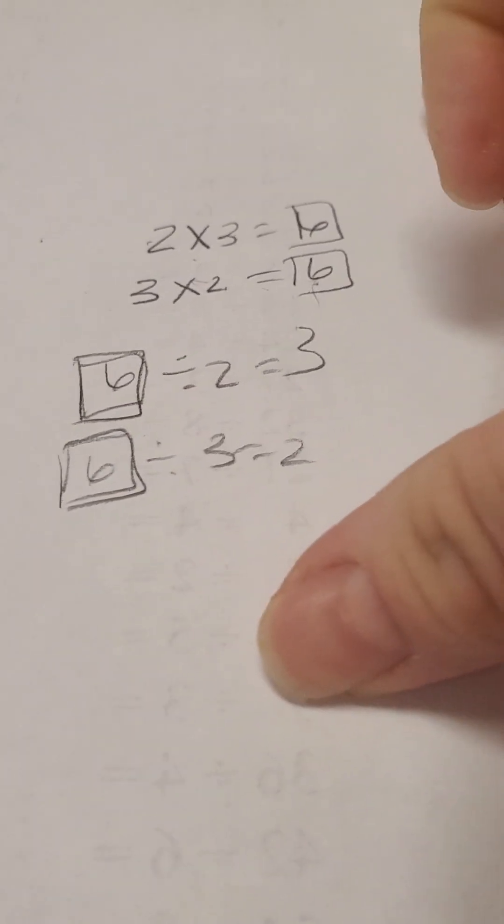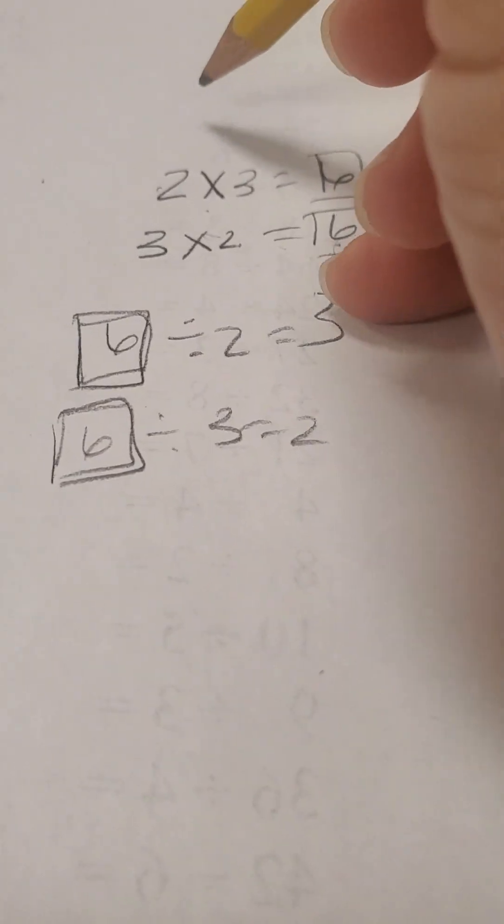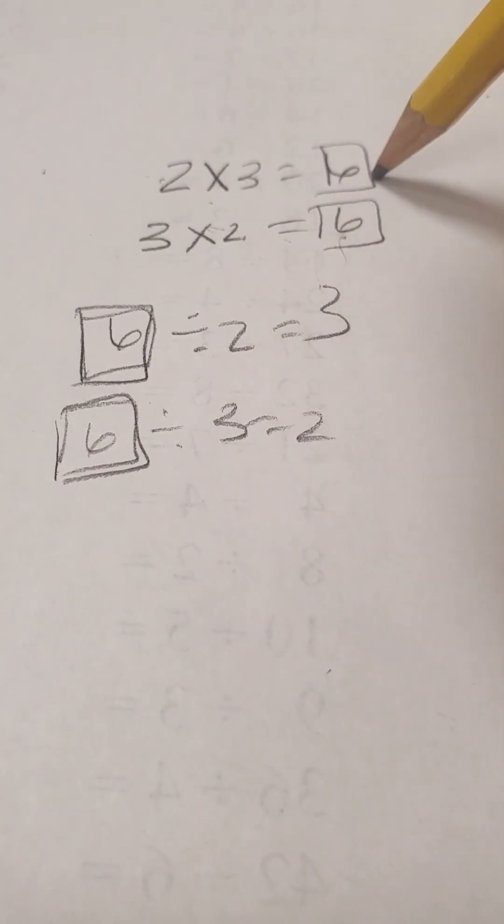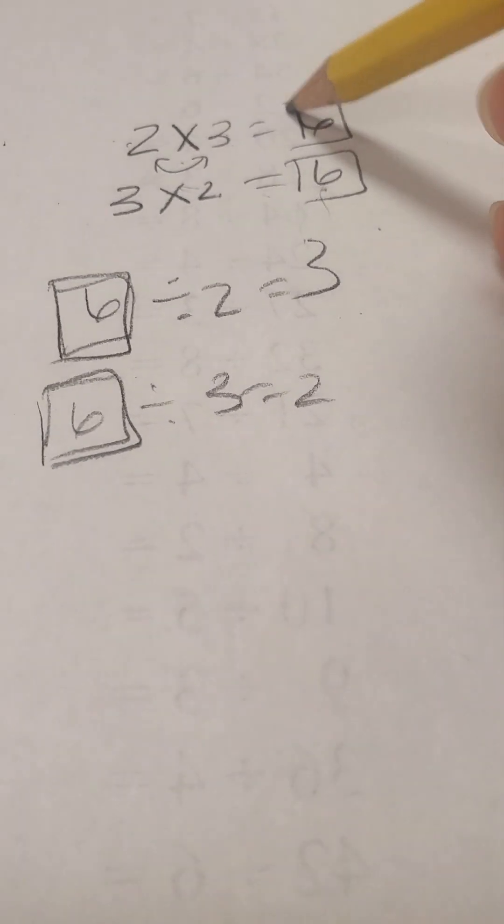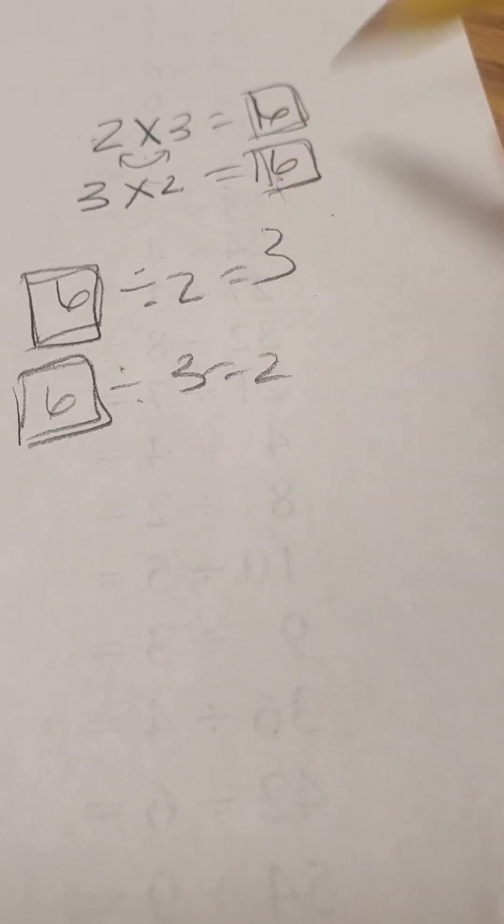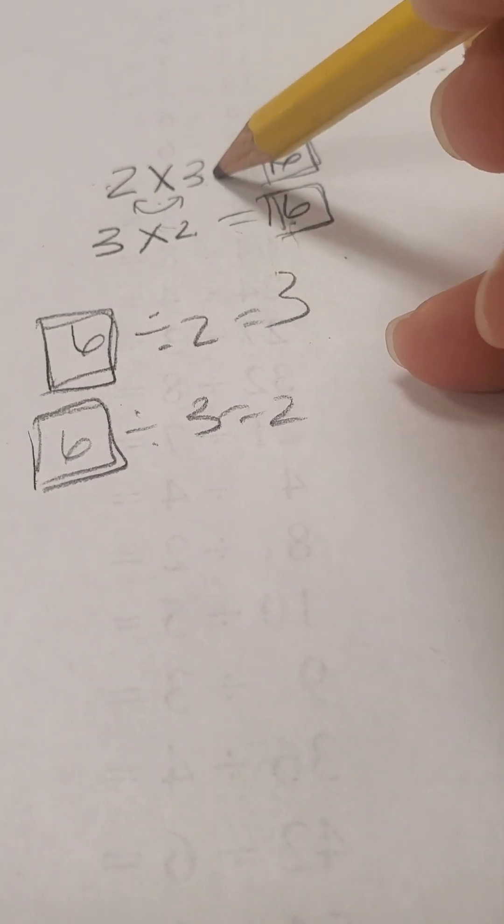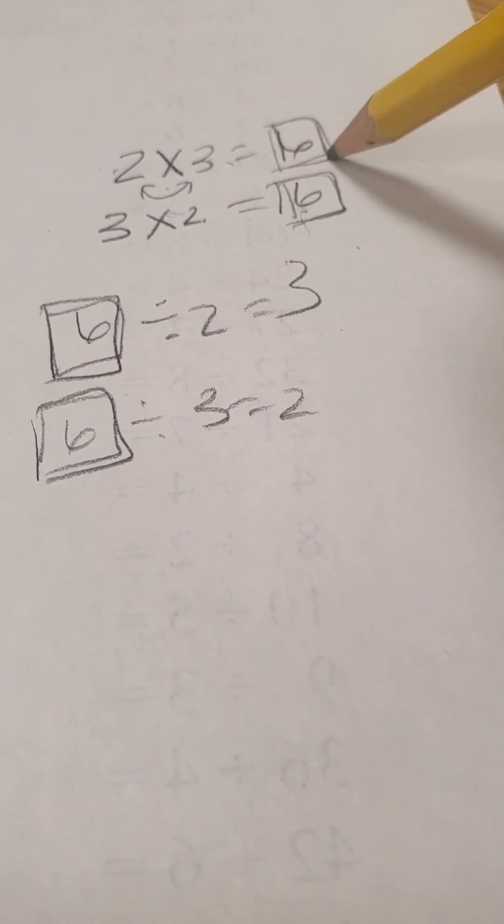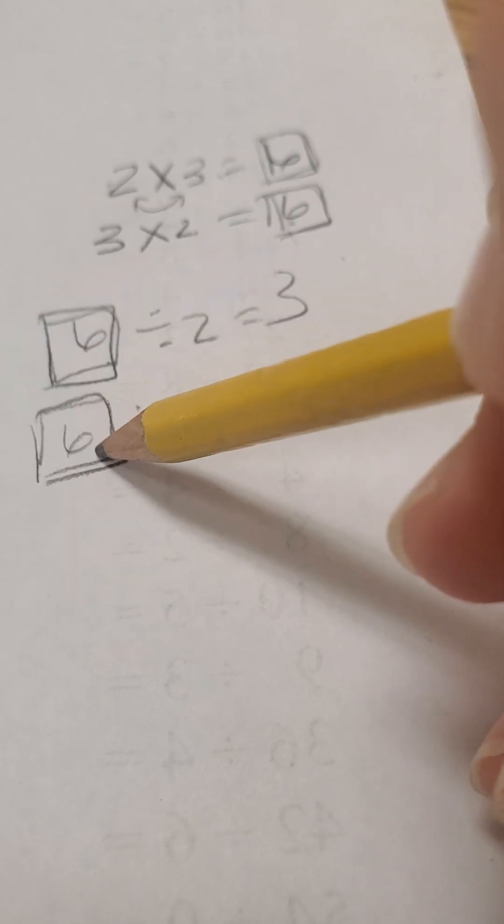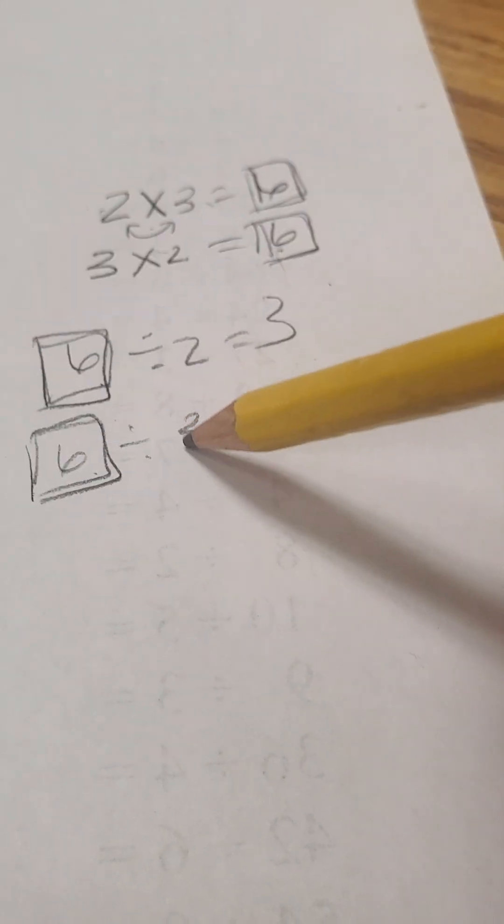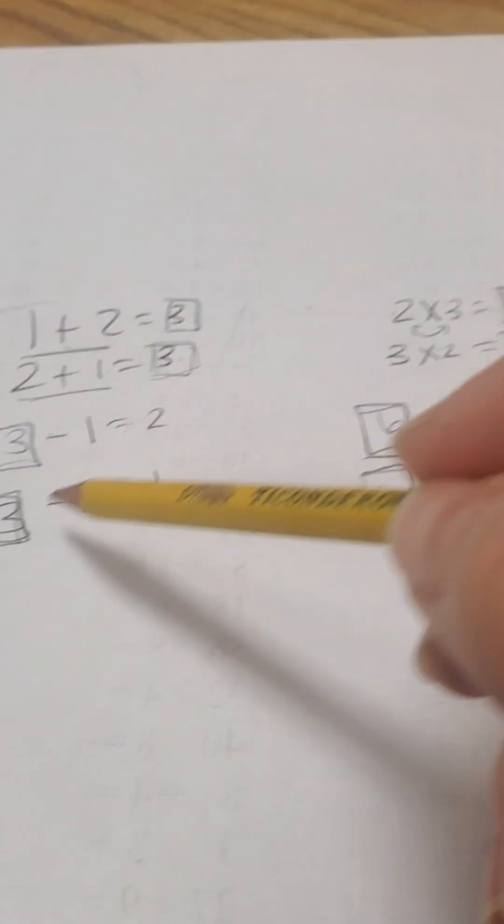That same thing is true with multiplication. 2 times 3 equals 6. Well, then 3 times 2 equals 6 because I can switch these because it's multiplication. Same rule with the addition. Same thing here. If I have this locked in, the only thing that can be 3 times 2 is 6. This number has to be locked in. The beginning number has to be locked in with division, the same as with subtraction.